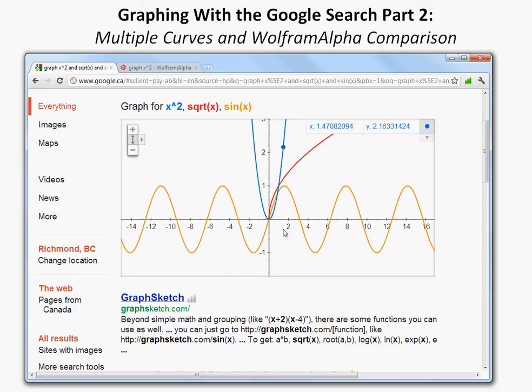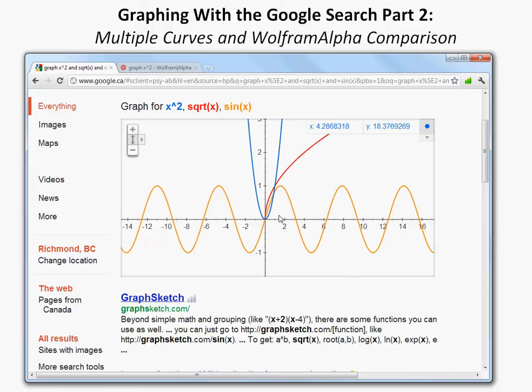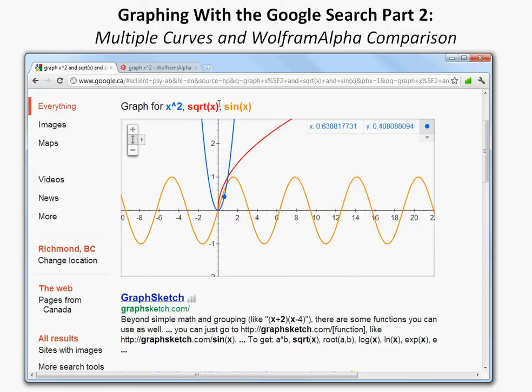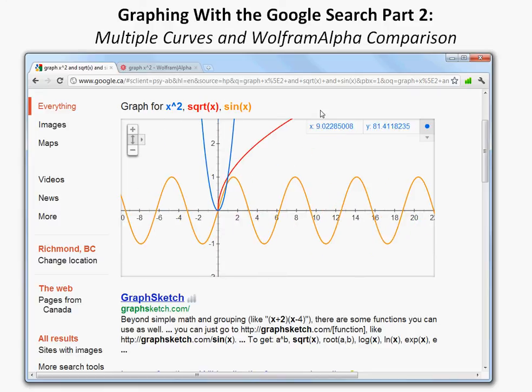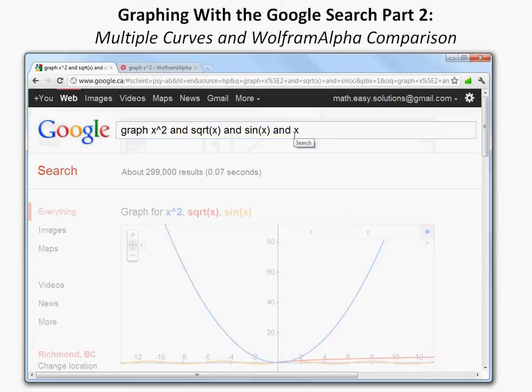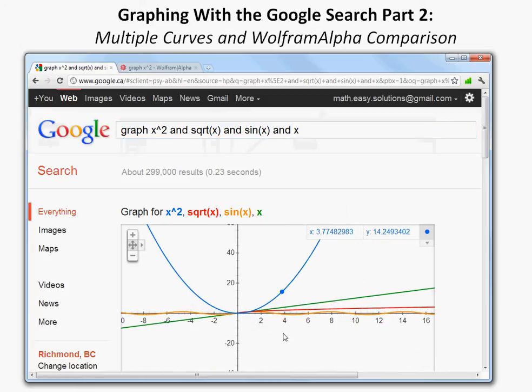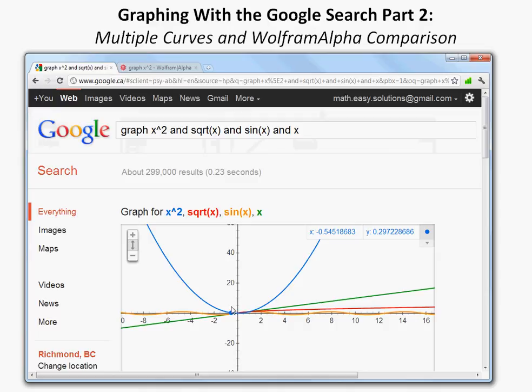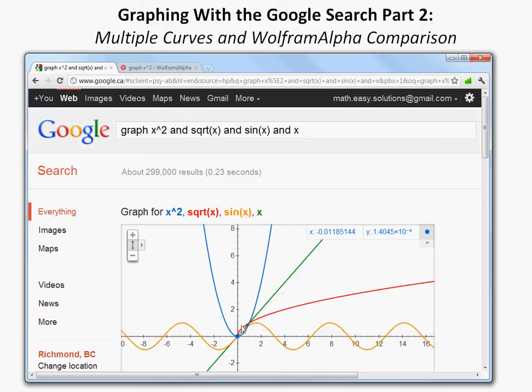So we want to, so we need to zoom in more on the y-axis so that we can actually see everything clearly. So, and then let's graph something else, and x. And let's zoom in again vertically, so you can see.